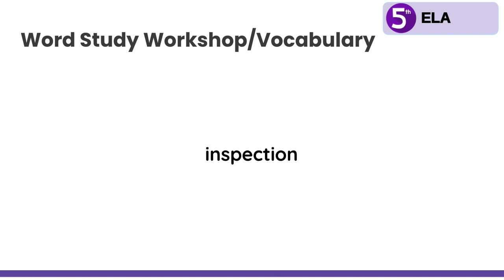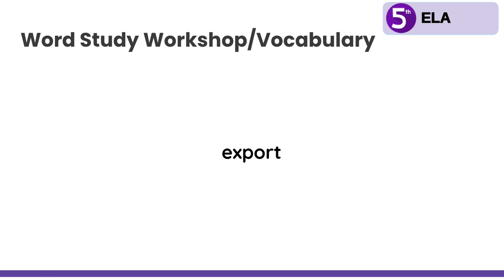The next word we are going to study is export. Think about what comes to your mind when you hear the word export, and then look for a Latin root. Hopefully you see the Latin root port right here, which meant to move, so this has something to do with moving something. Think of it as: let's say somebody in the United States makes a product and they want to sell it to people in other countries — they have to export their product. That means they have to send it out of their country, send it somewhere else. So export means to move something away from you, to move something to somewhere else. We need to write this word in the port column.